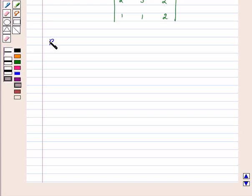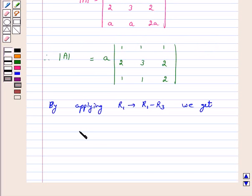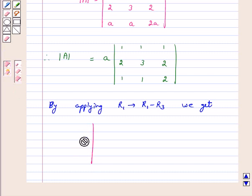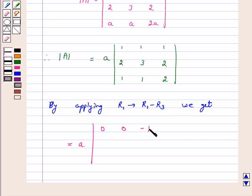By applying r1 goes to r1 minus r3, we get determinant A is equal to a times the determinant 0, 0, minus 1; 2, 3, 2; 1, 1, 2.